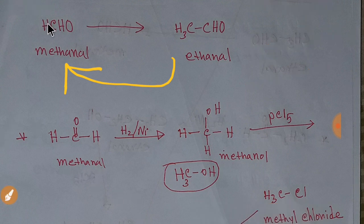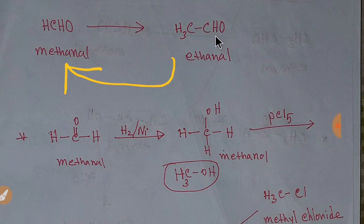To convert methanal to ethanal, you have to increase one carbon in the chain. To increase the number of carbons in the chain, the mother compound we use is an alkyl halide. So you have to convert methanal to an alkyl halide — that is, methyl chloride — which is the corresponding alkyl halide of methanal.